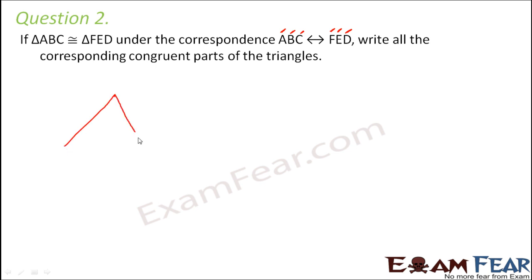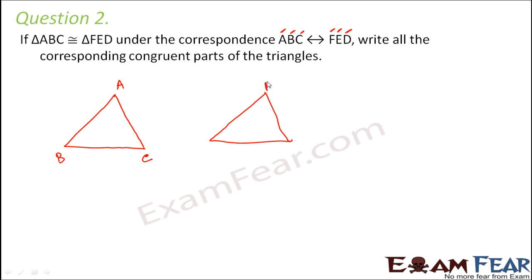If you have triangle ABC and another triangle FED, and you overlap these two triangles, then F will overlap with A, E will overlap with B, and D will overlap with C. That is why A and F are corresponding vertices, B and E are corresponding vertices, and C and D are corresponding vertices. The question asks us to write all the corresponding congruent parts of the triangles.